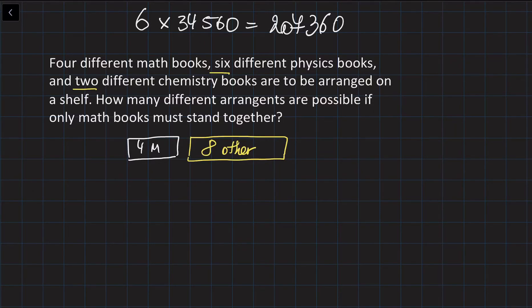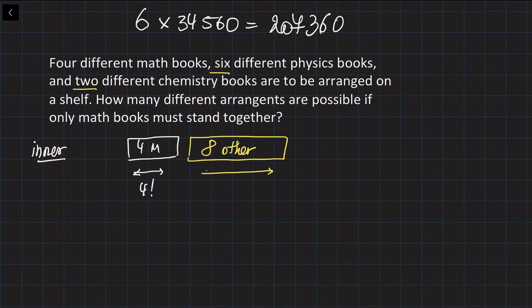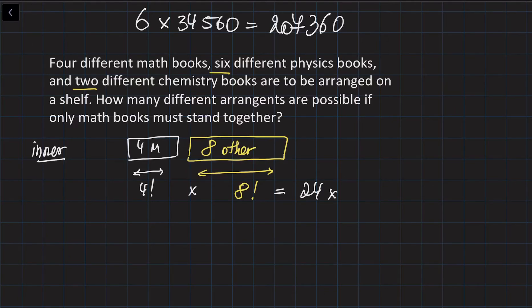If we put the math books first and then all the other books, the four math books are going to be arranged in 4 factorial different ways, and the eight other books are going to be arranged in 8 factorial ways. The number of rearrangements in one row where the math block comes first is the multiplication of 8 factorial times 4 factorial. So 4 factorial is 24, and 8 factorial is 40,320 — multiplied together gives 967,680.